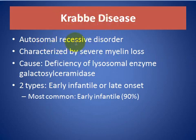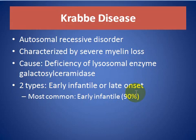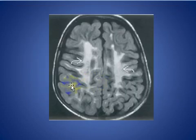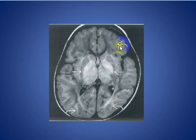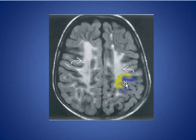Krabbe disease is an autosomal recessive disorder characterized by severe myelin loss, caused by deficiency of the lysosomal enzyme galactocerebrosidase. There are two types: infantile and late onset, with early infantile being most common at about 90%. Axial MRI shows increased signal in the central semiovale bilaterally. Notably, the subcortical U-fibers are spared in Krabbe disease, unlike in Canavan disease where the U-fibers are involved.